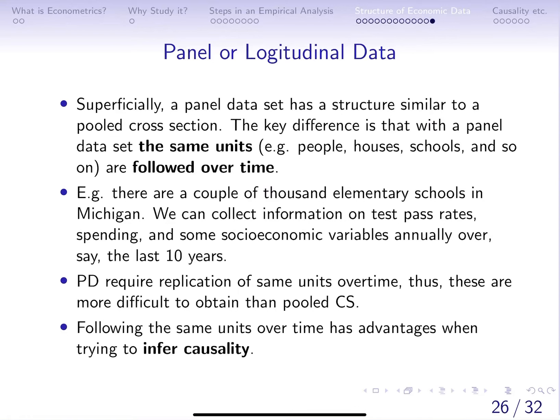The last type of data we want to consider is panel or longitudinal data. If you look at a panel data set, it has a structure very similar to a pooled cross section. You might have data on units, on cross sections over time, but the key difference between panel data and a pooled cross section is that in panel data we are following the same cross-sectional units over time.